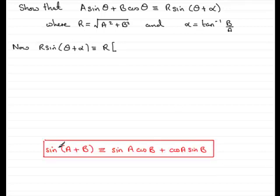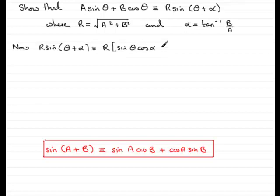It comes from this identity here. The sine of one angle plus another, let's call them a and b — where a would be θ and b would be α in this example, and these a and b have nothing to do with the a and b constants from before. Sine of (a + b) is identical to sin a cos b + cos a sin b. So using this identity, we get sin θ cos α + cos θ sin α.